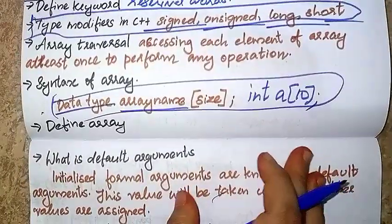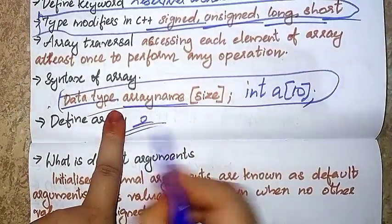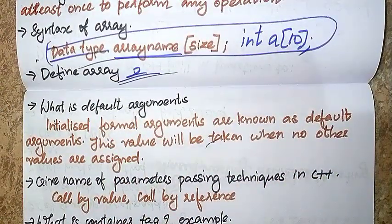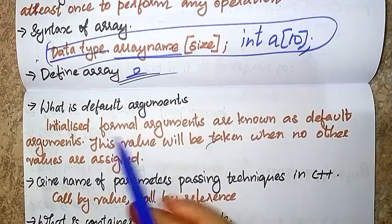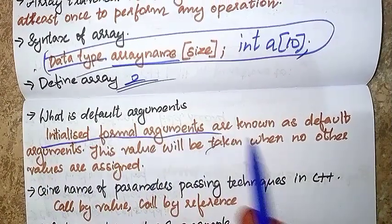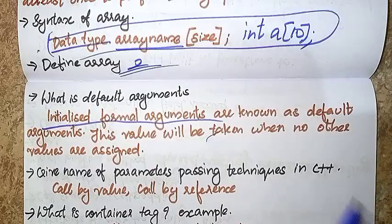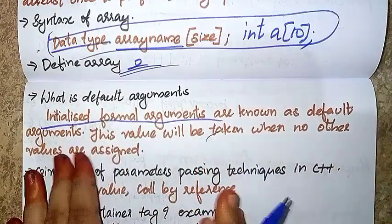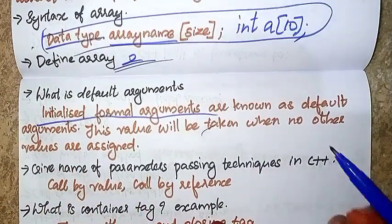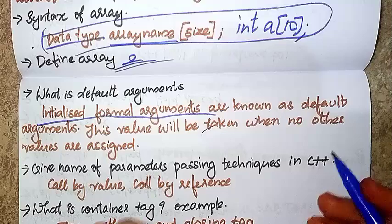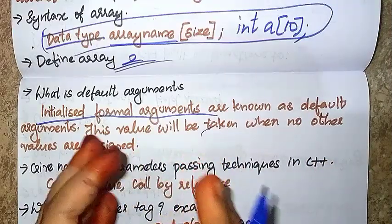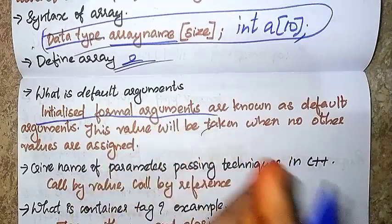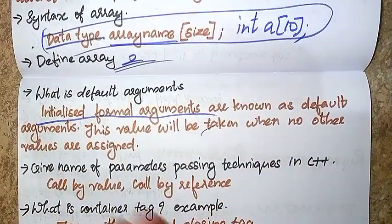The next one is to define class. Formal Arguments are known as Default Arguments. This value will be taken when no other values are passed. If you want to select the default, it is set as Default Arguments.